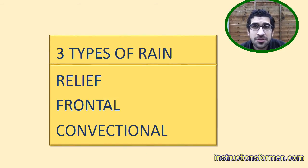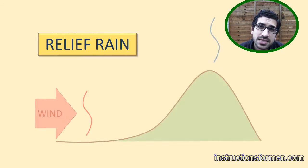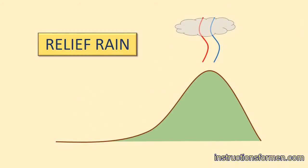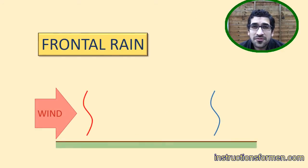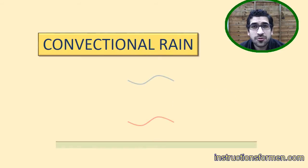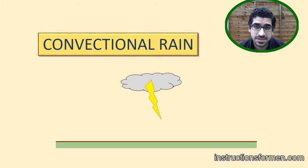Rain occurs as a result of three possible mechanisms. Relief rain: this is when warm air is moved by winds up mountains or hills to meet colder air. Frontal rain: this is when warm air from one area runs into a cold front of air from another area. Convectional rain: this is when warm air rises straight up to meet colder air, resulting in thunderstorms.